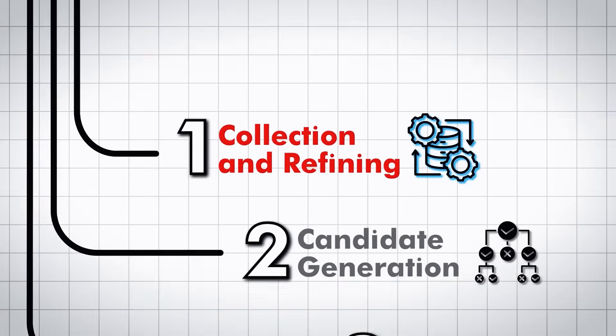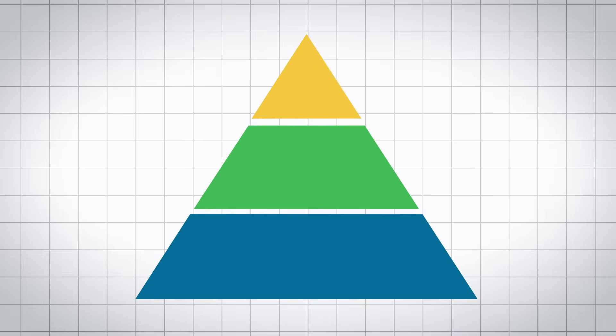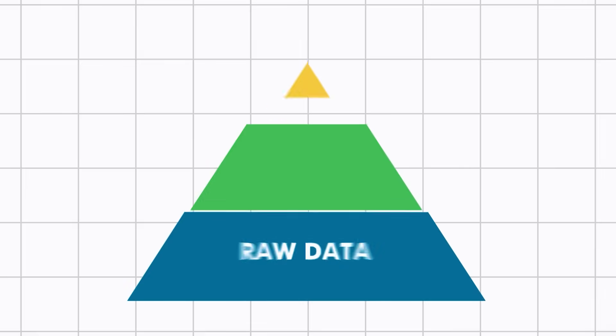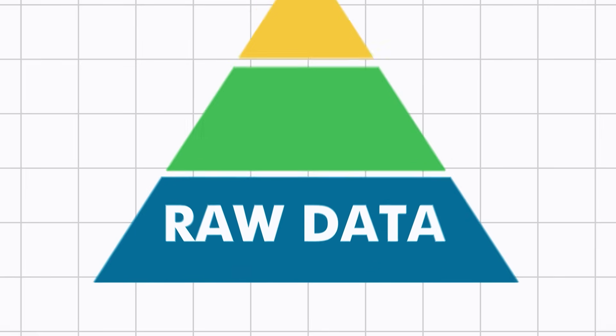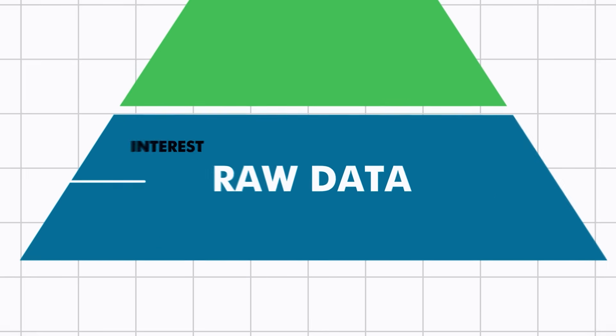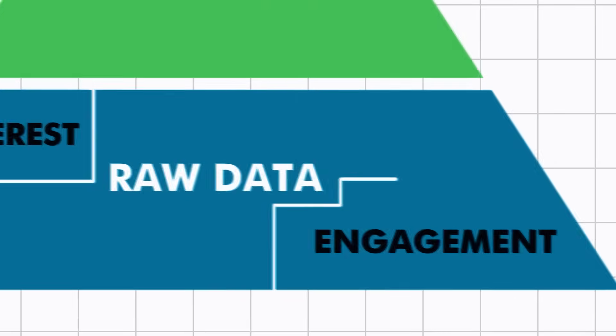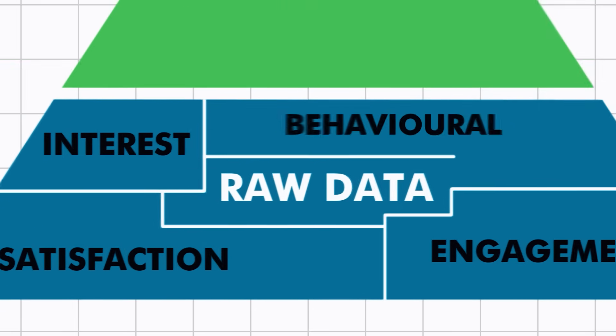Let's start with collecting and refining data. In this step we're going to look at three categories of data, just to give you an idea of how complex the YouTube algorithm actually is. On the bottom layer you have your raw data — things like interest data, engagement data, satisfaction data, behavioral data points, or any other data points that are very easy to measure and don't require any calculation.